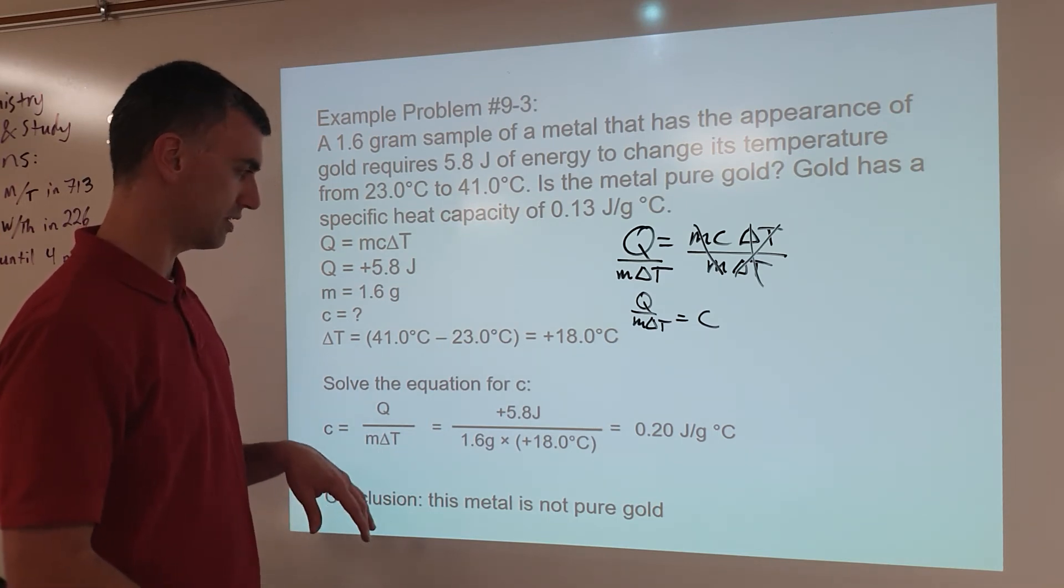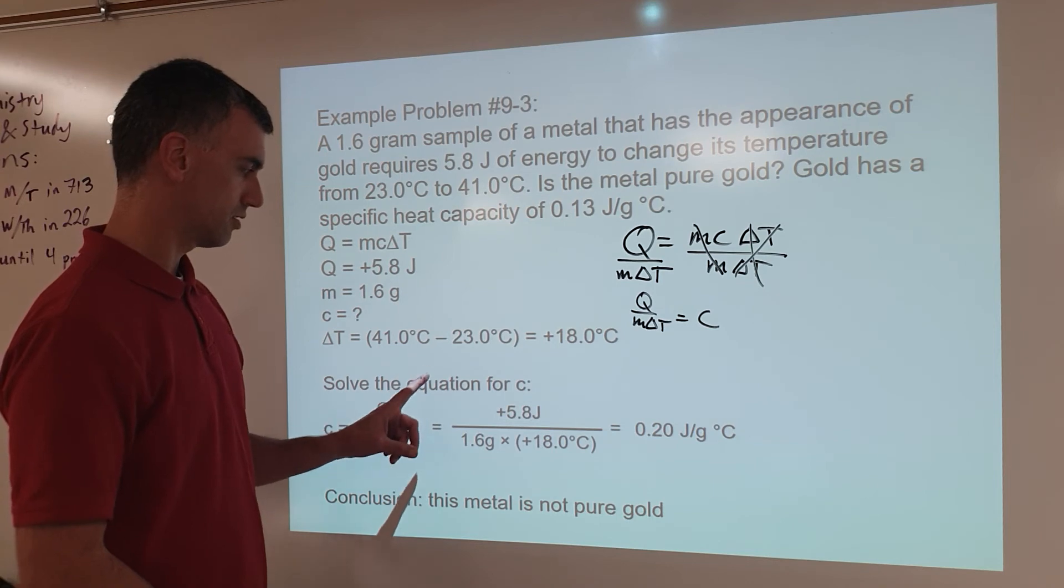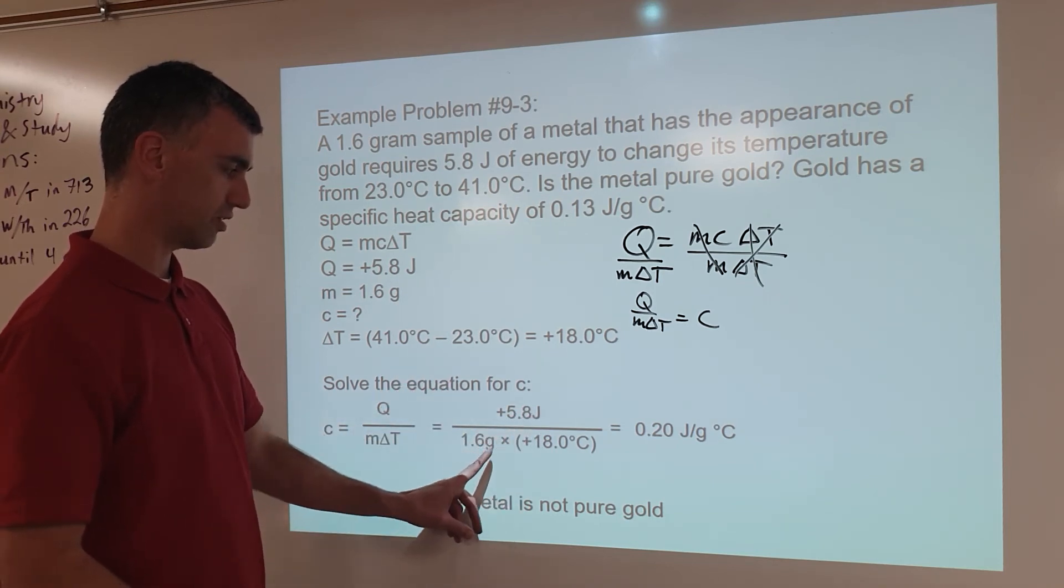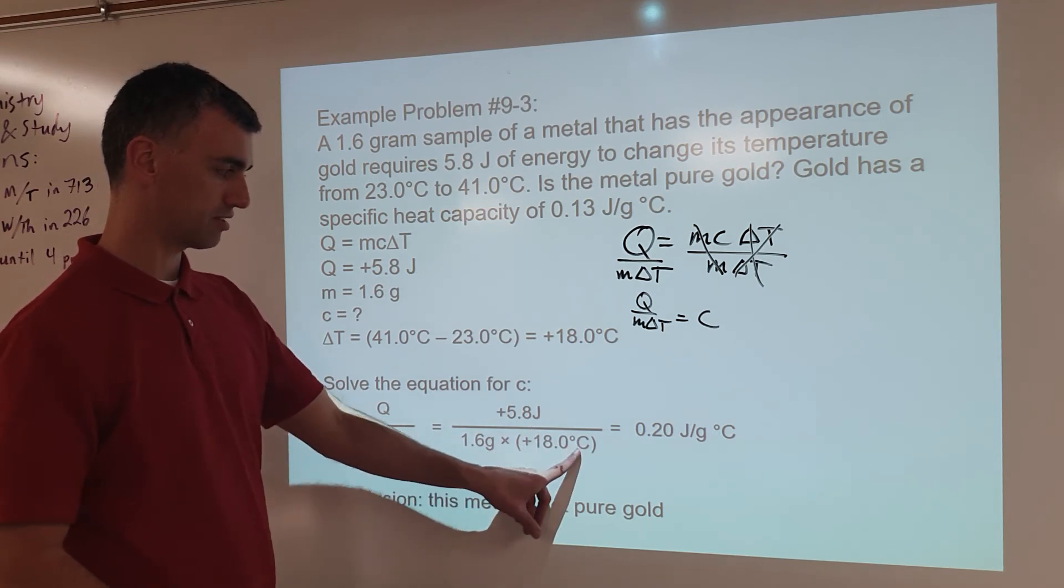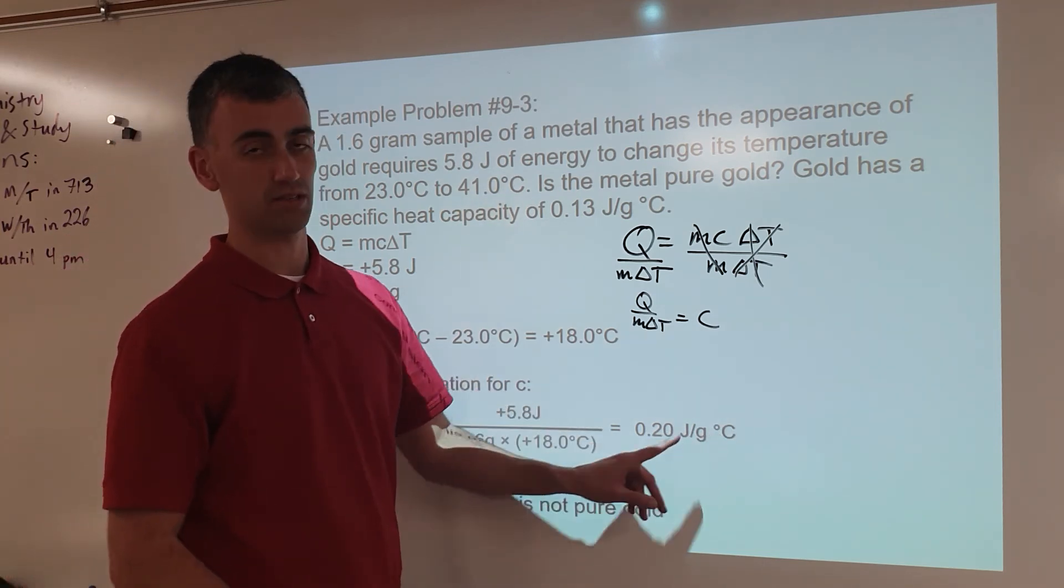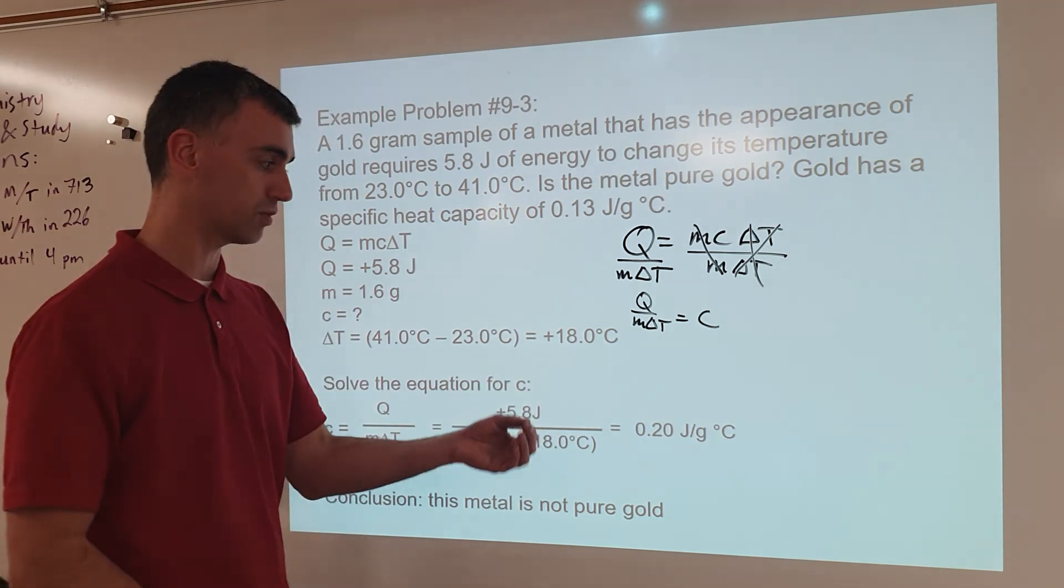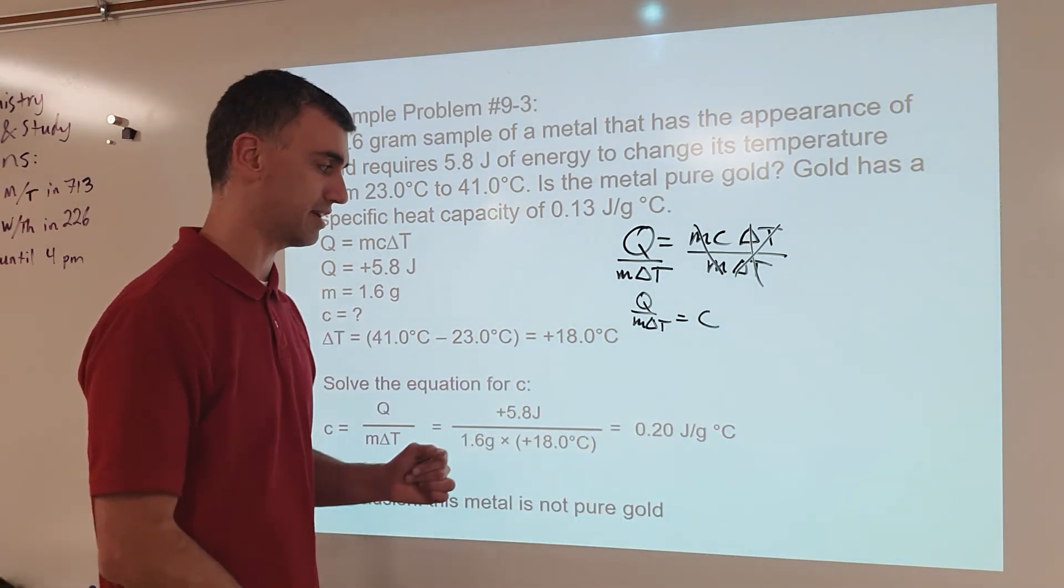So because of that, what we're going to notice is the other thing that happens is the units. Look, joules on top, grams and degrees Celsius on bottom, so notice joules per gram degrees Celsius. Okay, so the units give us what we need, and this is the correct units for specific heat capacity.